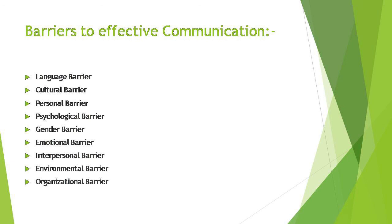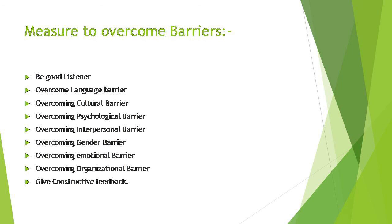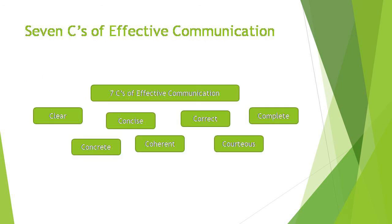There are seven C's for effective communication. When having a conversation, you need to be clear with what you are sharing, very concise, and correct with the data you are delivering. Your statement should be complete, concrete based on facts and figures, coherent meaning interrelated, and courteous — it should not hurt anyone's feelings or touch anyone's emotions. If the seven C's are followed, your communication will be effective.